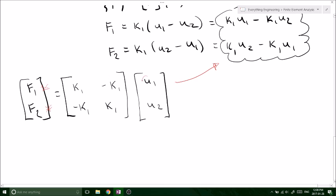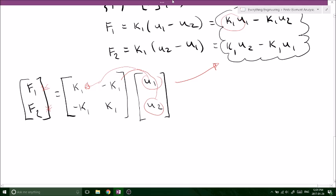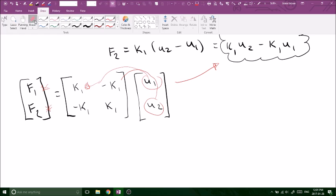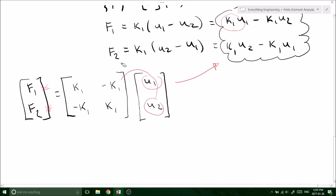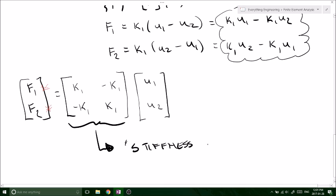So if we did this matrix multiplication, we will get those two equations for F1 and F2, right? Because U1 times positive K1 would give us this, plus U2 times negative K1 would give us this, and so forth. So we do know that these are equivalent, and this is what we will get if we did our matrix multiplication. Now, basically, we've solved and created our stiffness matrix.